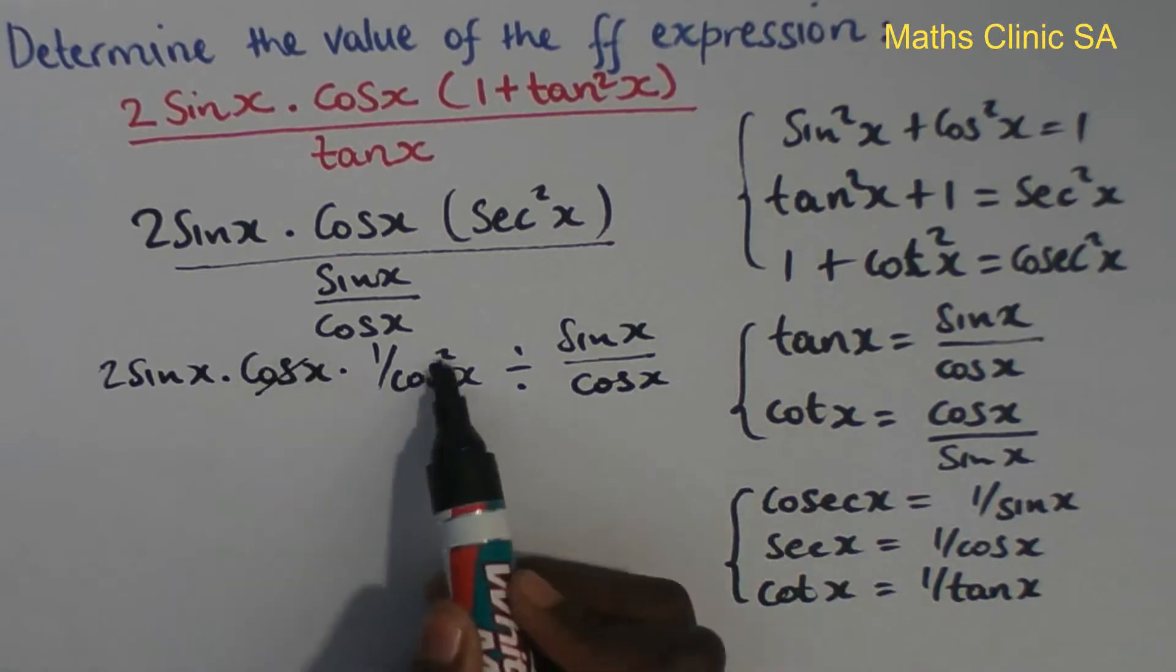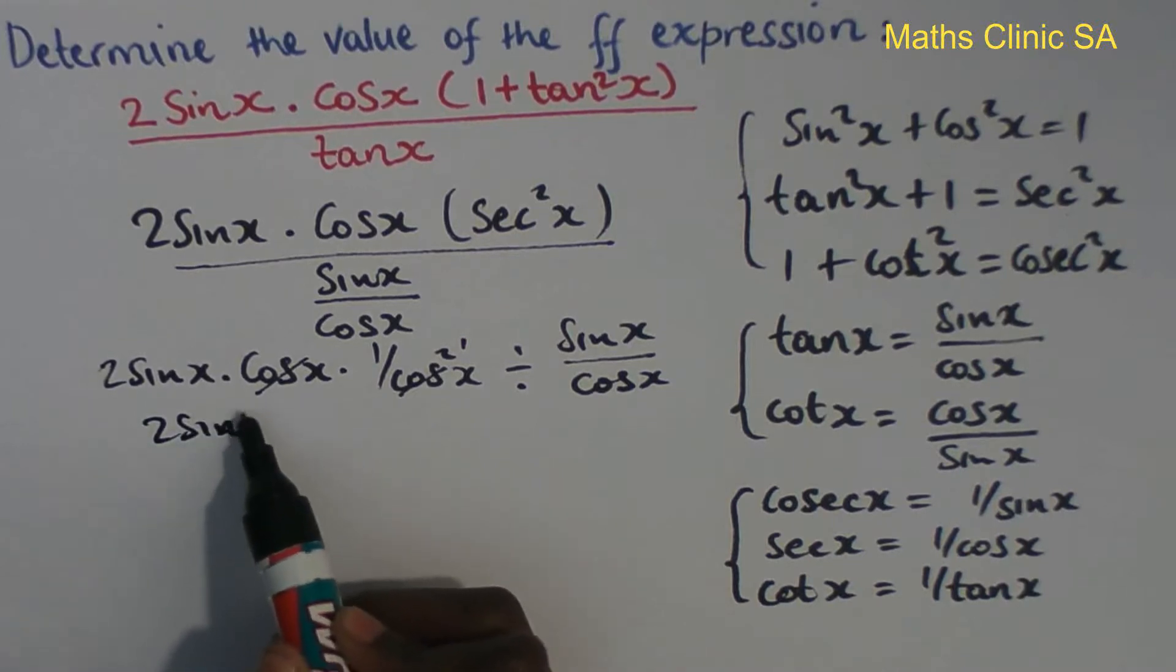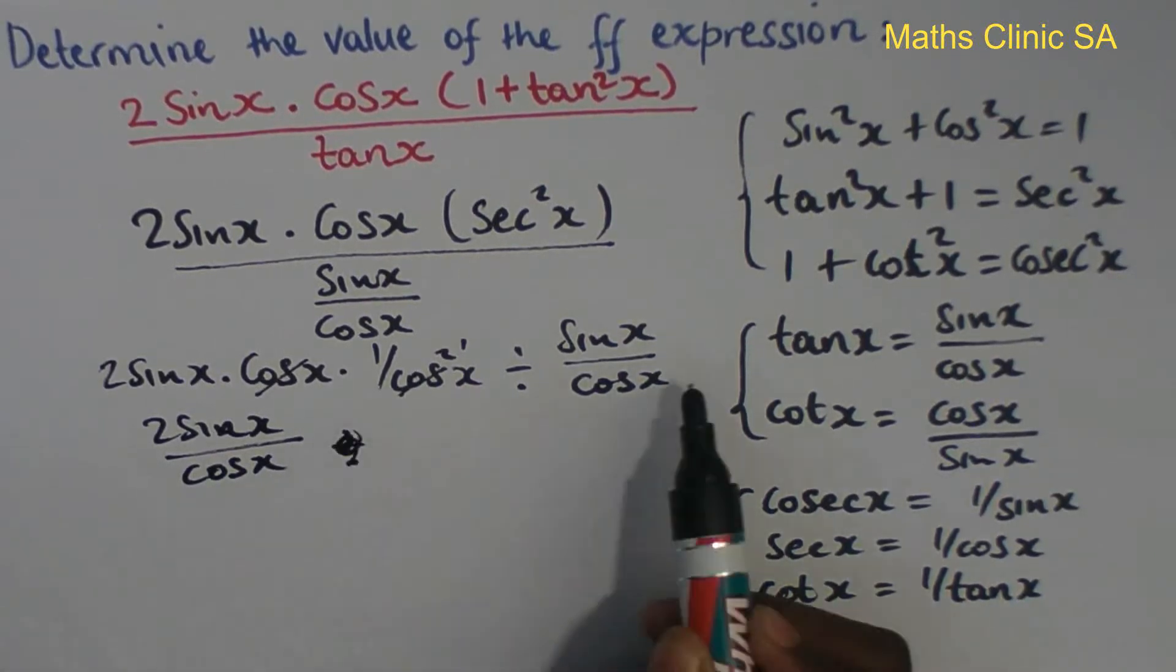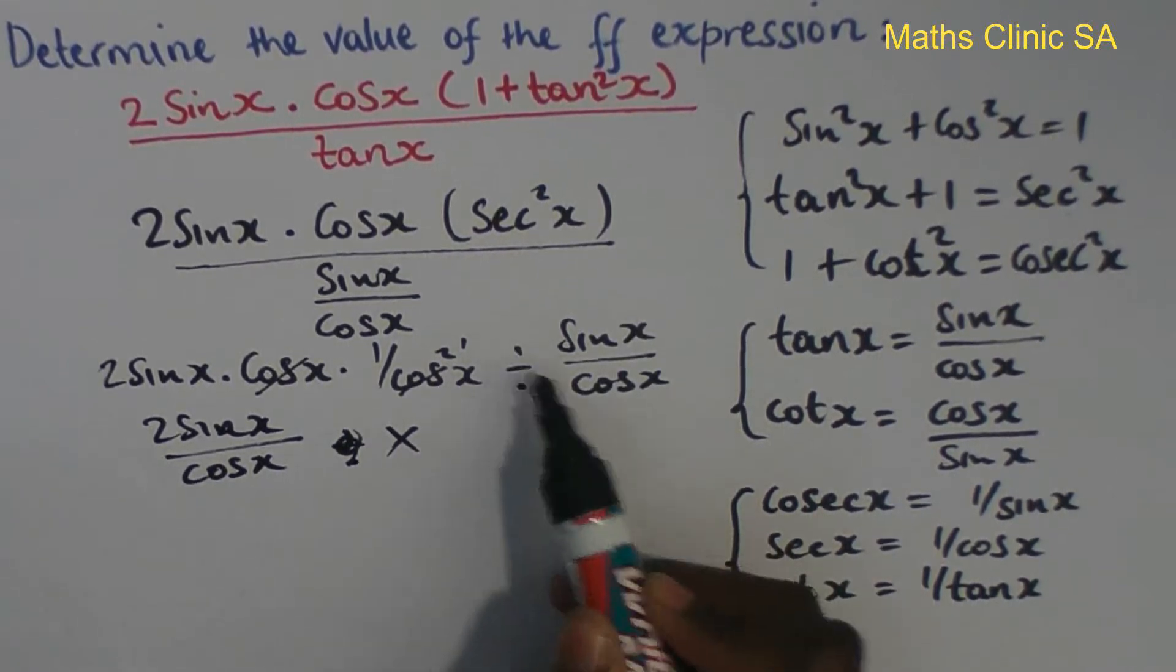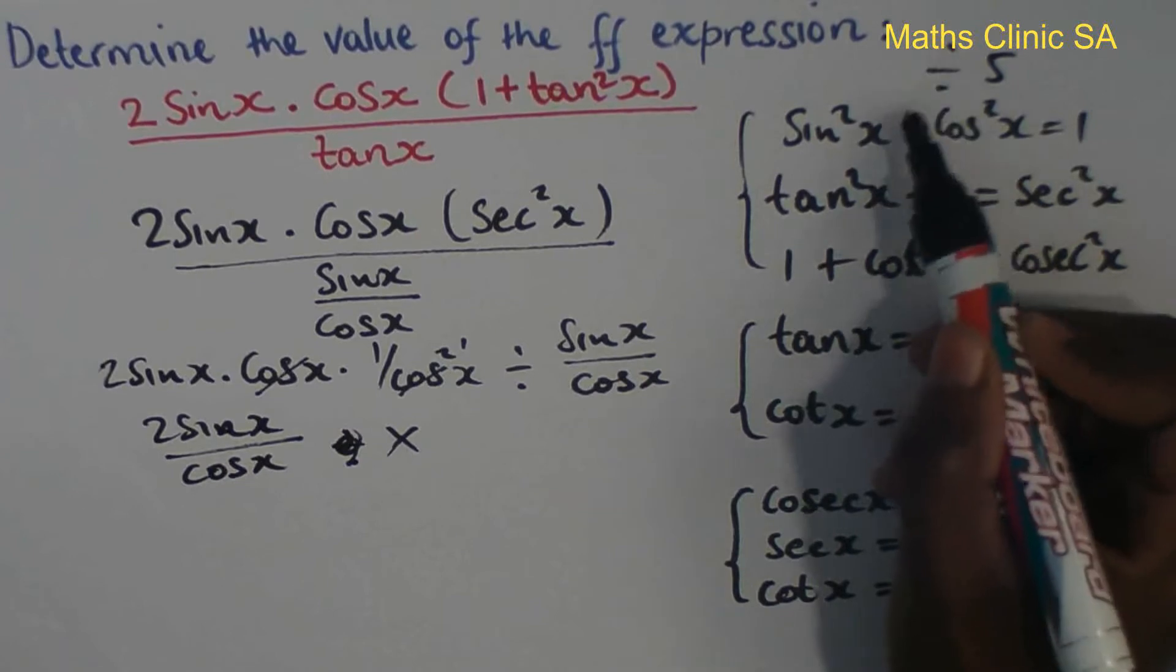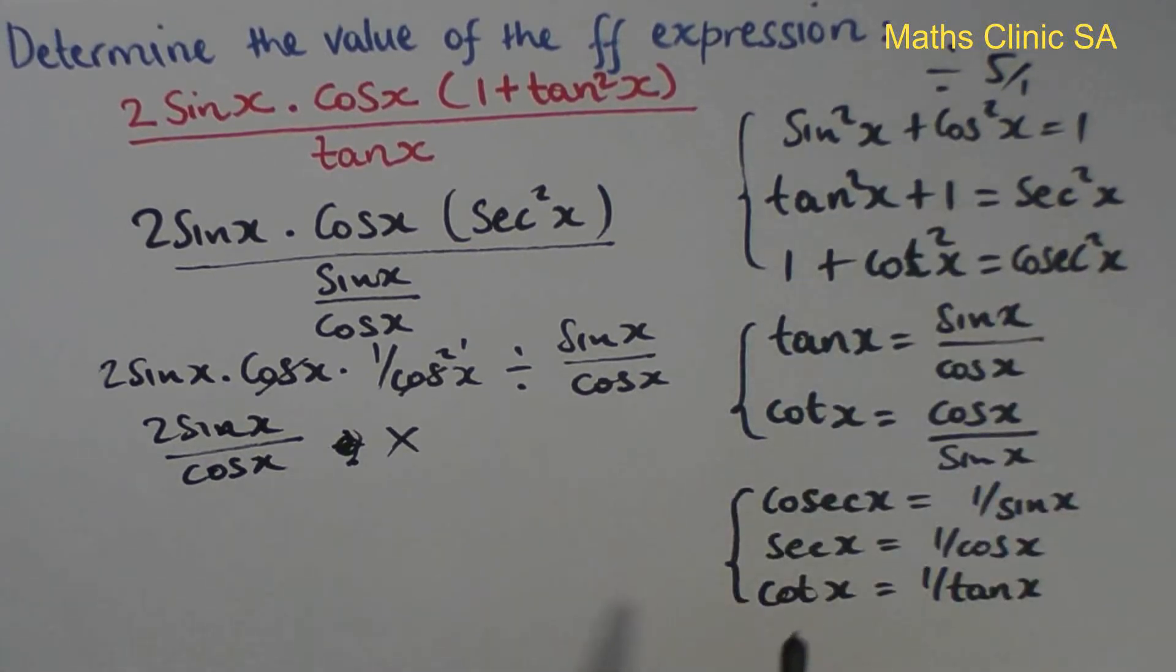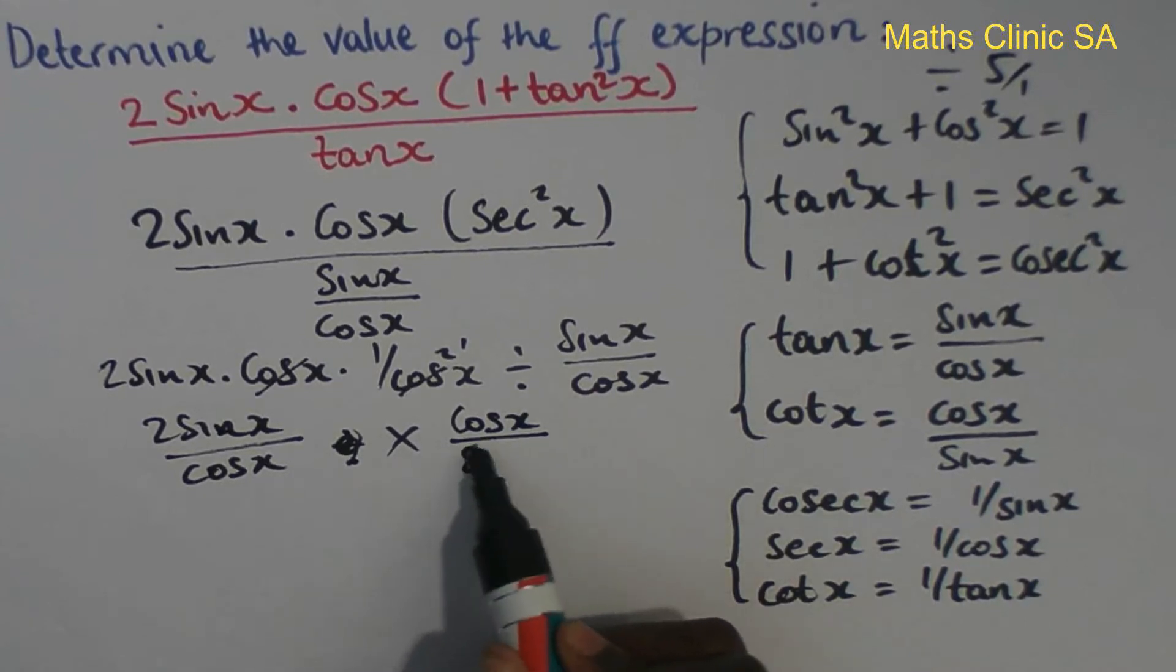The cos of x divided by - if you change the division sign to a multiplication sign, you invert the fraction. Whenever you change the division sign, you invert the fraction. So it becomes cos of x divided by sin of x.